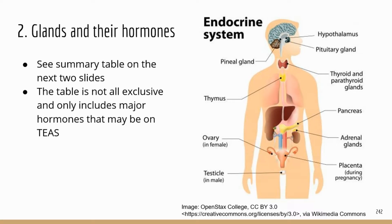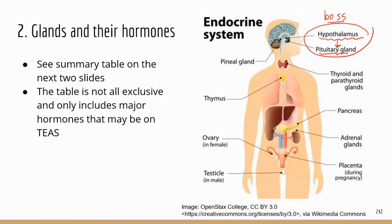Here are the important glands you may see questions about on the TEAS. We'll start with the boss glands — the regulatory glands that control the other glands. These top-tier glands are located in the brain: the hypothalamus and the pituitary gland, which sits right below the hypothalamus. The hypothalamus secretes hormones that regulate the secretion of the pituitary gland, so the hypothalamus is kind of like the boss for the pituitary gland.